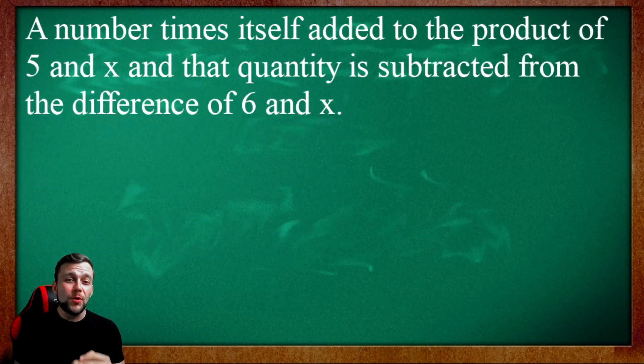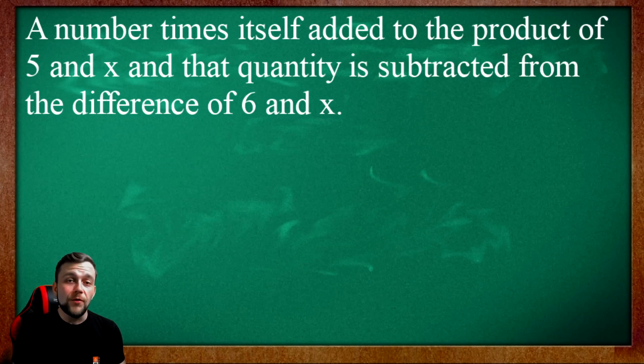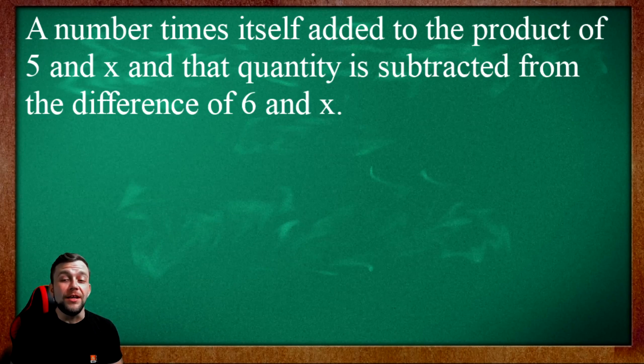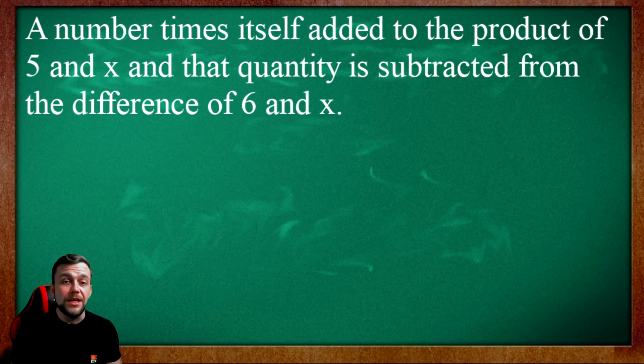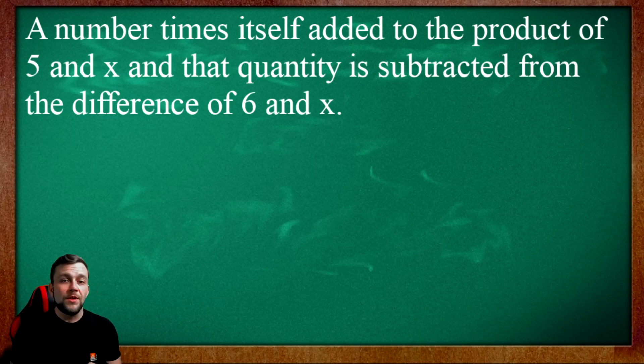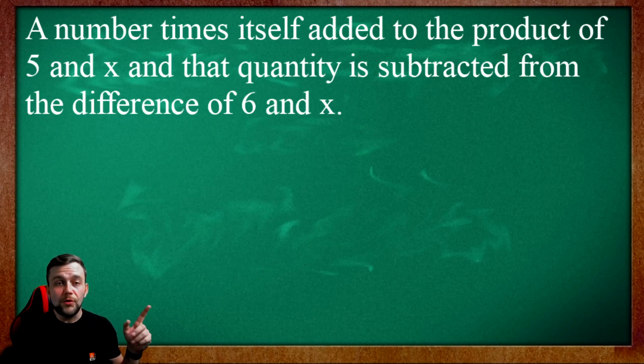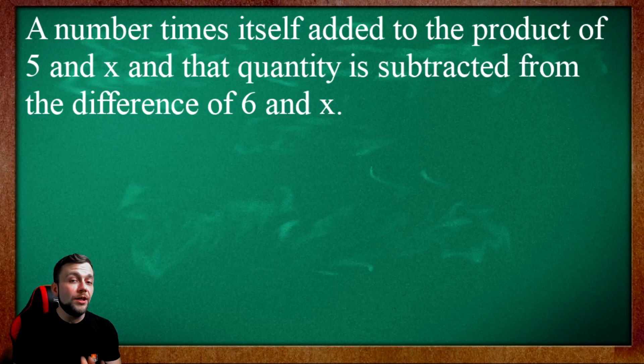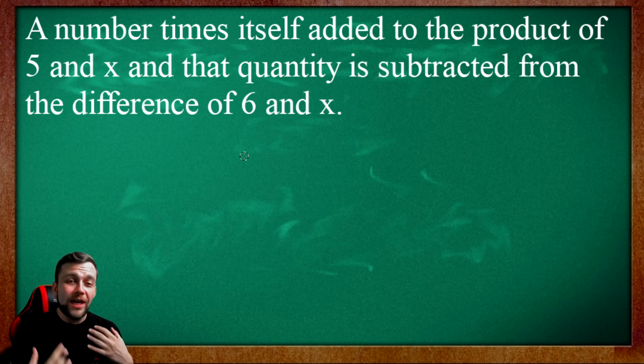This word problem right here is going to be the most difficult word problem example that we covered today. A number times itself added to the product of 5 and X, and that quantity is subtracted from the difference of 6 and X. I want you to take a moment, pause this video, find a piece of paper and a pen, and write this down and try to solve it for yourself before you look at how I'm going to do it. This will be a really good practice, and I want you to comment down below if you got this problem right.